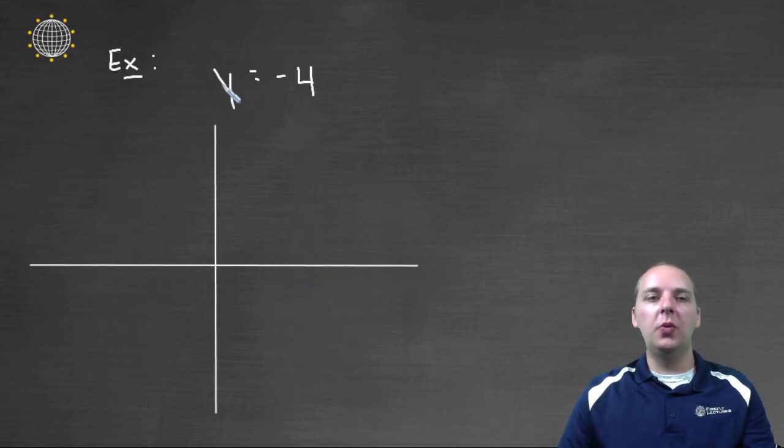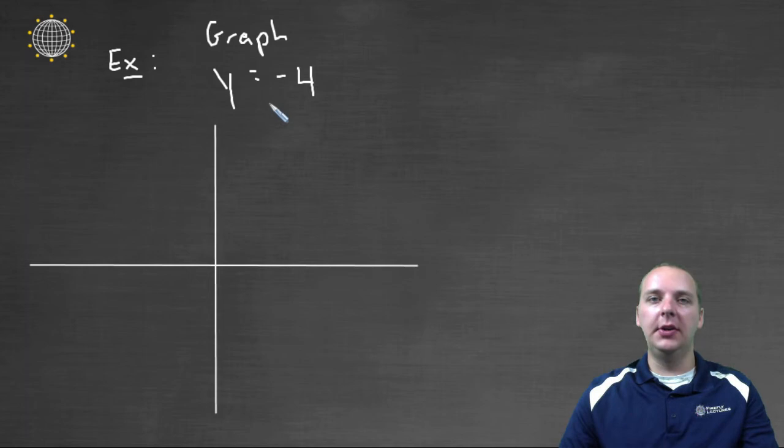On the other hand, let's look at this one. Y equals negative four, and let's suppose that we're asked to graph this linear equation. I notice it doesn't have an x, which means it's either horizontal or vertical. We're not really sure. Because it's y equals negative four, it's going to be horizontal.